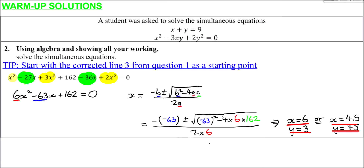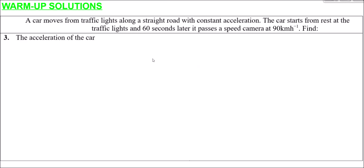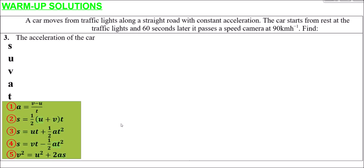Question 3 is about kinematics, acceleration, and particles. A car moves from traffic lights along a straight road with constant acceleration. The car starts from rest and 60 seconds later passes a speed camera at 90 km/h. We need to find the acceleration. Because it mentions constant acceleration, this is going to be a SUVAT question. We know T = 60 seconds, acceleration is what we're finding, and the initial velocity u = 0 since it starts from rest.